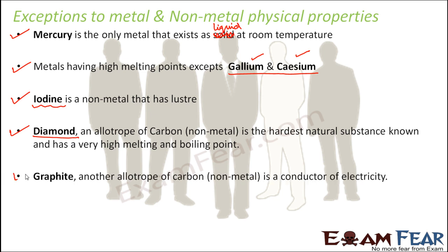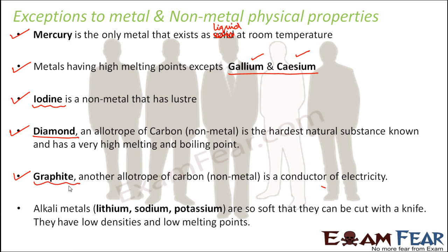Graphite, another allotrope of carbon, is a conductor of electricity. We say nonmetals are poor conductors of electricity, but graphite is the only exception — it is a good conductor of electricity, yet it is a nonmetal.